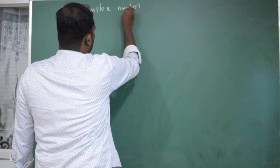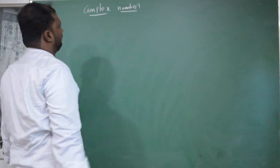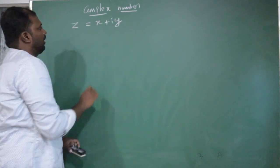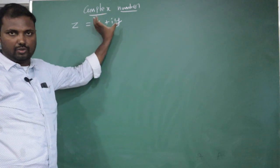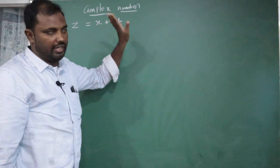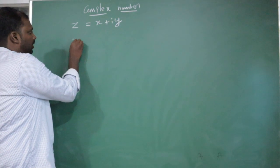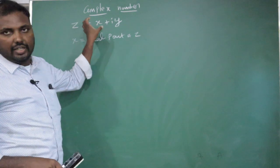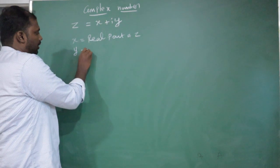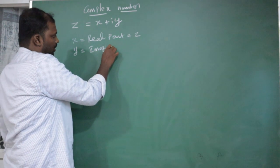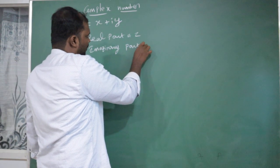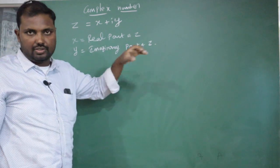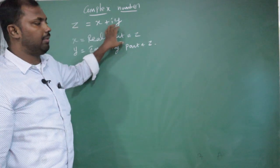A complex number has the general form Z, where Z is equal to X plus iY. Here X is the real part of Z, and Y is the imaginary part of Z.